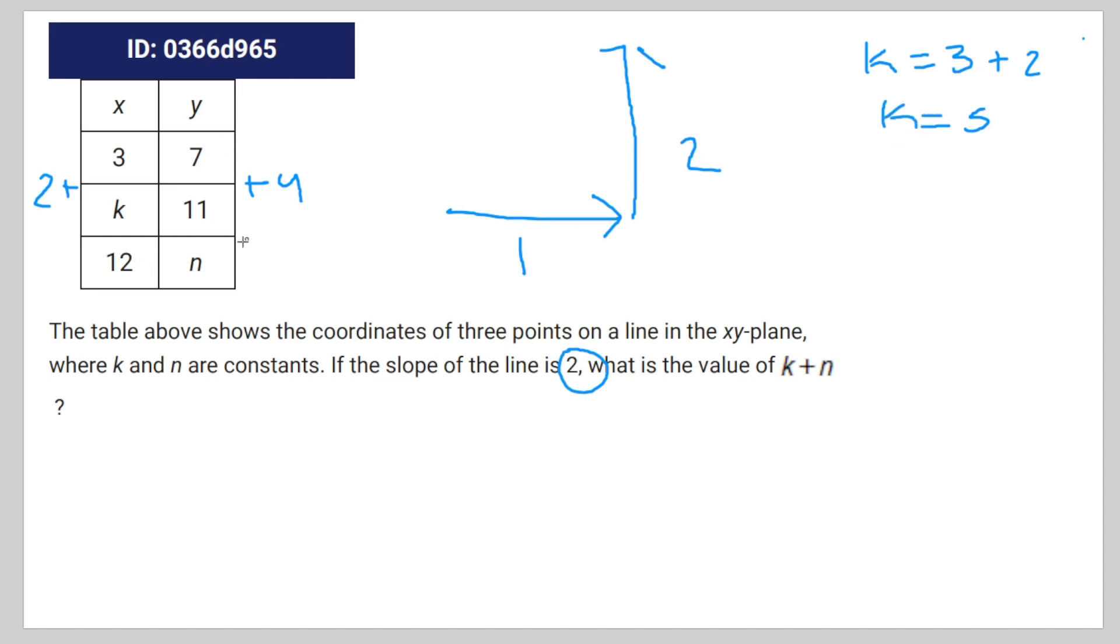And for x to increase by 9, y will have to increase by 9 times 2, which is going to be n is equal to 7 plus 9 times 2, which is 18. n is equal to 25.